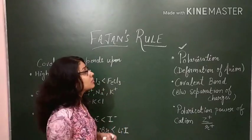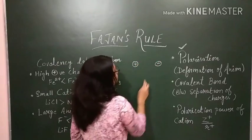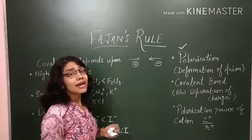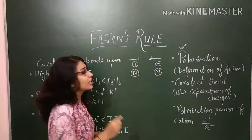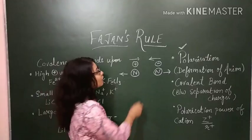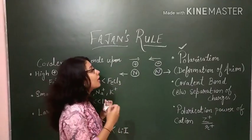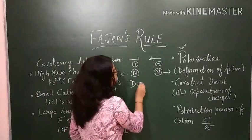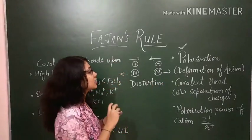Whenever an ionic bond is formed, there are two oppositely charged ions which approach and attract each other. But at the same time, their nuclei, which are positively charged, repel each other. This simultaneous attraction and nuclear repulsion gives rise to the deformation of the anion — that is, distortion of the anion's shape.